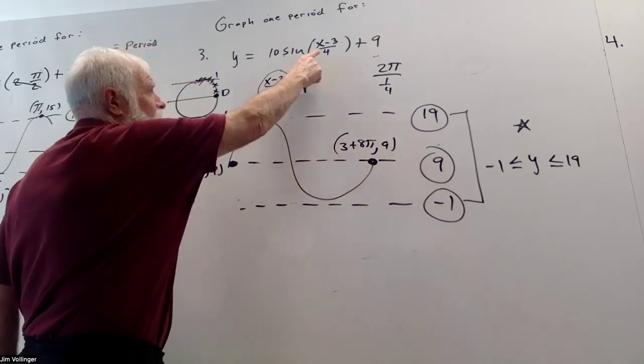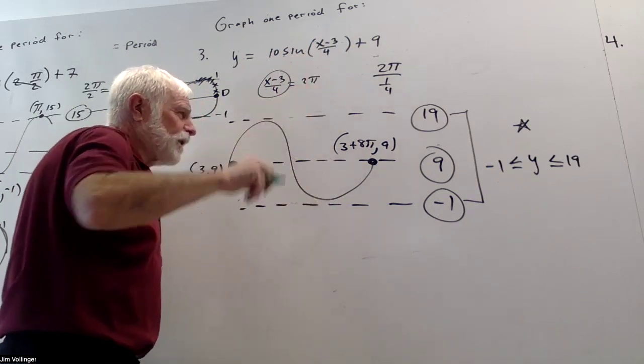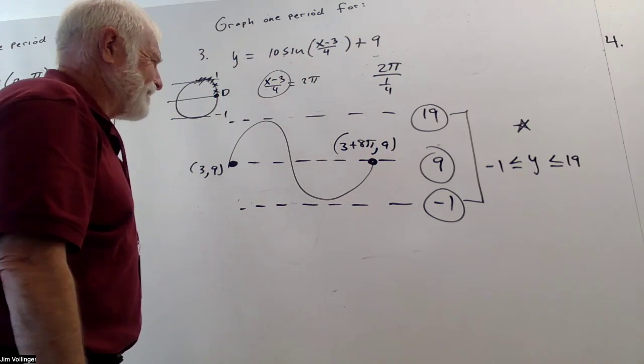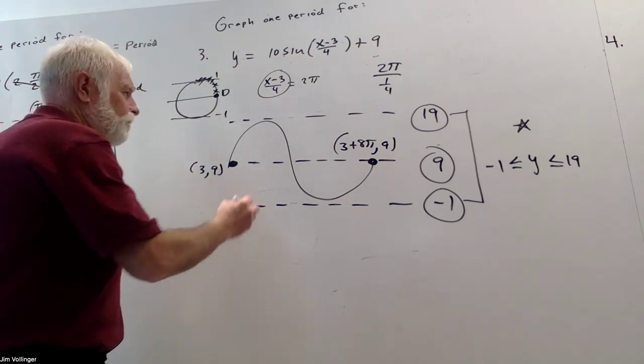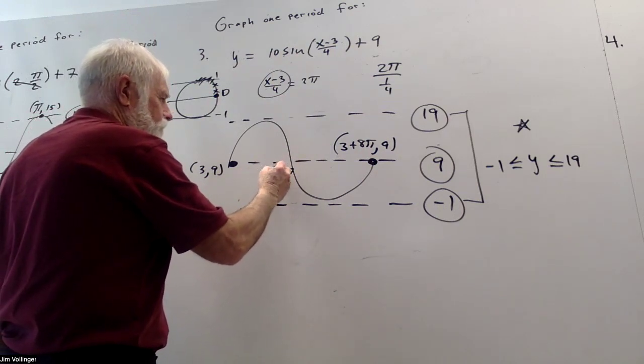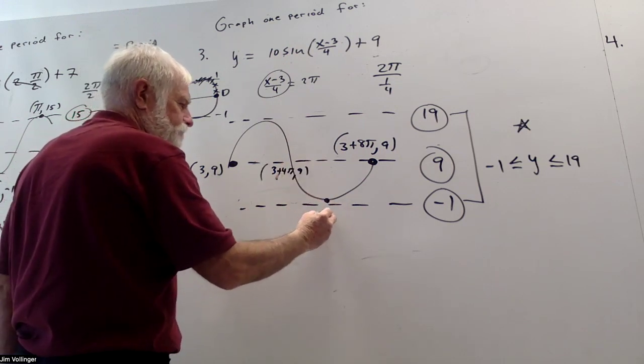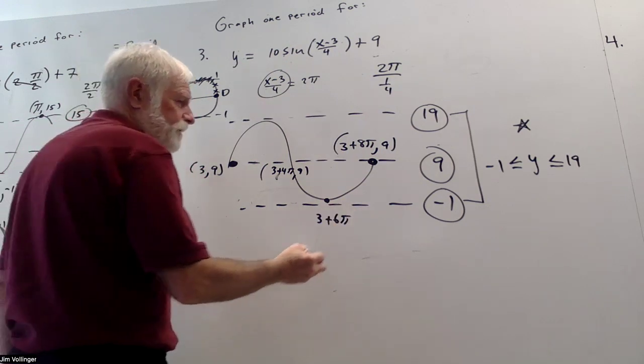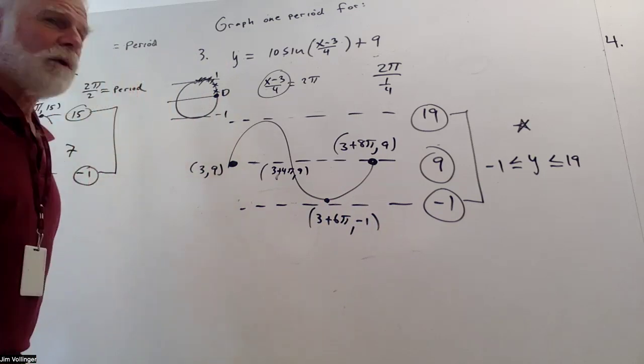And you should plug it in to see how that works. The 3's cancel. 8 pi divided by 4, 2 pi. And now we've got all kinds of nice symmetry here. All right, so 3 plus 4 pi would take us also to 9, and 3 plus 6 pi should take us to negative 1. You can plug those numbers in to see if I've made any mistakes. Hopefully not.